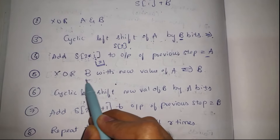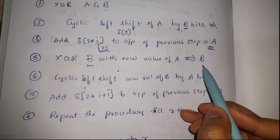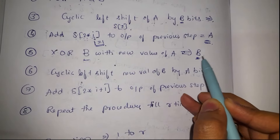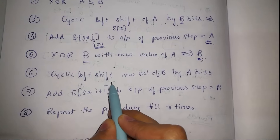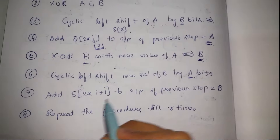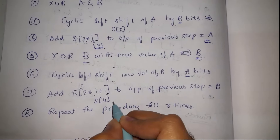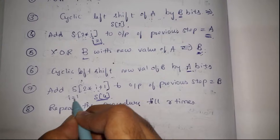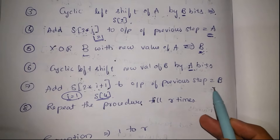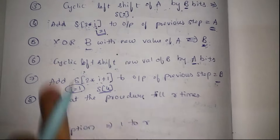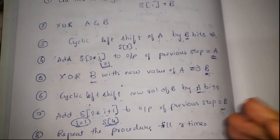Next we perform an XOR operation of b with the obtained new value of a, yielding a new value of b. We then perform a cyclic left shift of this new b by a bits, and add S[2i+1] — which is S[4] for i equal to 1 — the corresponding sub-key for this round. This gives a new value of b. These new a and b values are passed to the next round, and the entire process repeats until the end of all rounds.